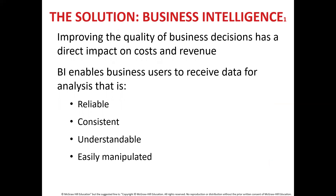The solution to being data rich and information poor is improving the quality of business decisions, which has a direct impact on costs and revenue. Business intelligence enables business users to receive data for analysis that is reliable, consistent, understandable and easily manipulated. For instance, giving a discount may or may not help the bottom line depending on the profitability of the client over the duration of the relationship. Managers can provide existing staff with business intelligence systems and tools that assist them in making better, more informed decisions, creating an agile, intelligent enterprise.